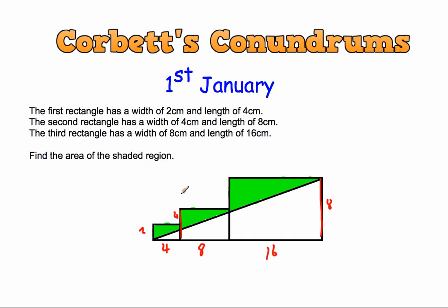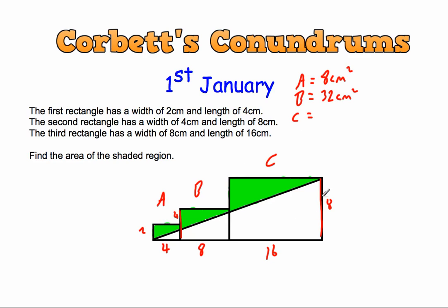Let's find the areas of the rectangles. The first rectangle: area equals 2 times 4, which is 8cm squared. The second rectangle: area equals 4 times 8, which equals 32cm squared. The third rectangle: area equals 8 times 16, which equals 128cm squared. Adding those up gives us the area of the whole shape: 168cm squared.